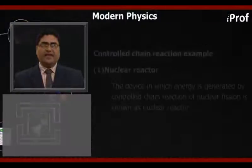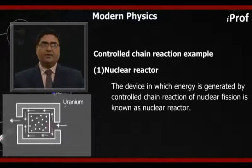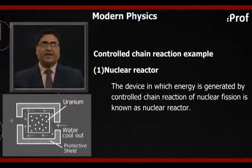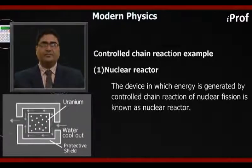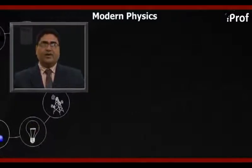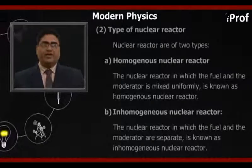Let's see the example of controlled chain reaction, that is, the nuclear reactor. The figure shows the nuclear reactor. The device in which energy is generated by controlled chain reaction of nuclear fission is known as a nuclear reactor. Here moderator and control rods are used.